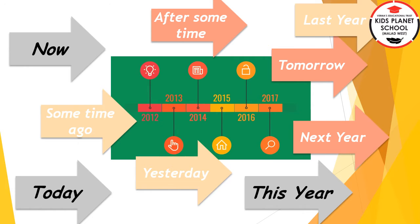When we use words like now, tomorrow, next year, last year, we talk about time. Now, today, or this year — these terms indicate the present. This means that we are talking about present time. But when we are talking about yesterday, some time ago, last year, we are talking about the past.